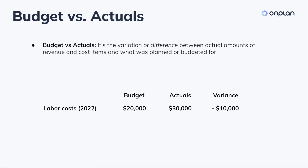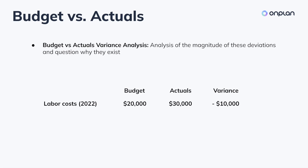And then there is Budget versus Actuals variance analysis. This is where we analyze the magnitude of these deviations and find takeaways for why budgeted amounts were not met. If, as per our example, labor costs came in higher than budgeted amounts, the onus is on us as FP&A professionals to determine why this has happened.